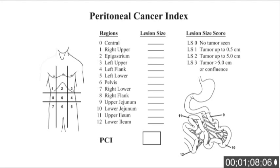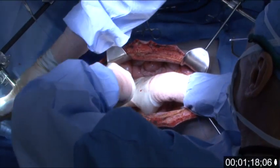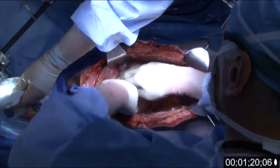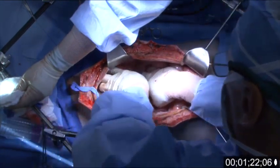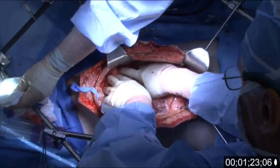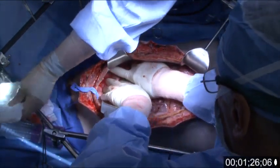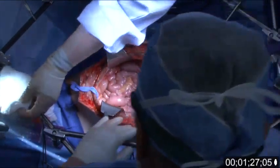The peritoneal cancer index, abbreviated PCI, allows an estimate of the distribution and extent of disease. Our goal is to visualize all the peritoneal surfaces that may contain nodules referred to as peritoneal metastases.